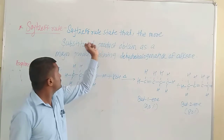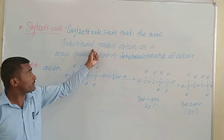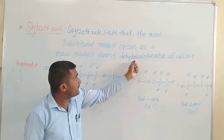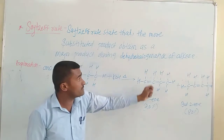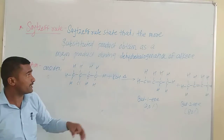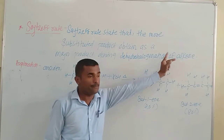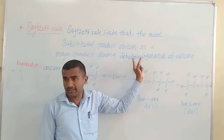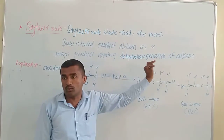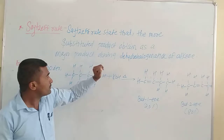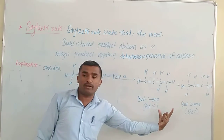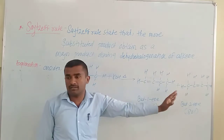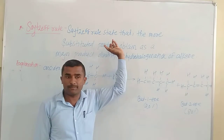The Zaitsev rule states that the more substituted product is obtained as the major product during dehydrohalogenation of alkanes. That means the alkene is formed — 'D' means to remove — dehydrohalogenation means hydrogen and halogen get removed. We get two products; out of these, one is major and one is minor. Which is major and which is minor is decided by the Zaitsev rule.